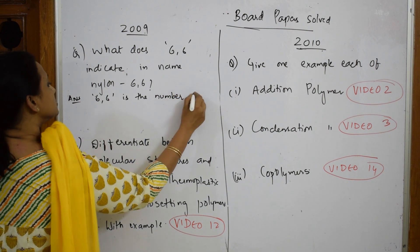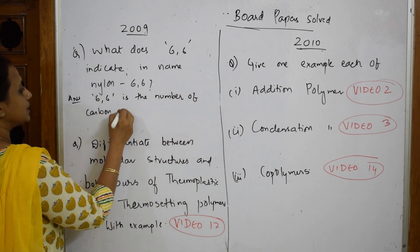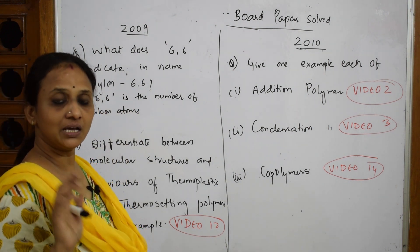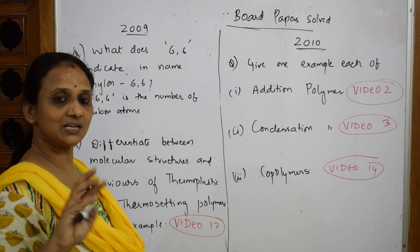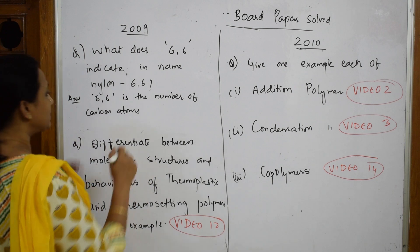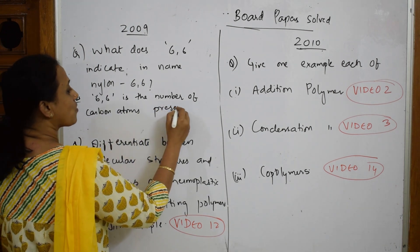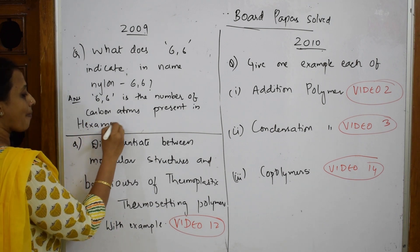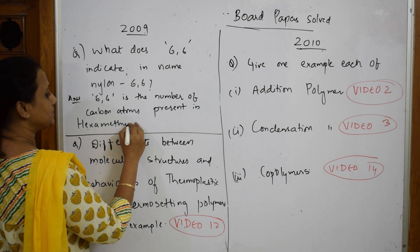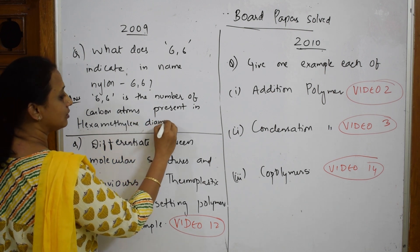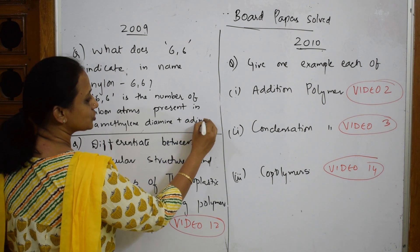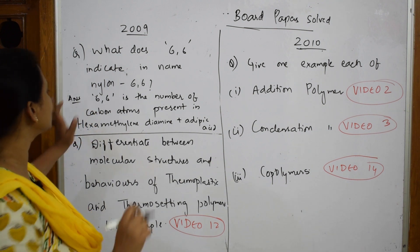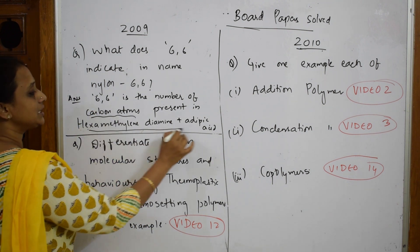Six six refers to the number of carbon atoms — one six is present in hexamethylene diamine, and the other is present in adipic acid, which has four plus two carbons, totalling six. So you should write: carbon atoms present in hexamethylene diamine and adipic acid. Write it in words like this; if you wish, you can write the formula also, but since they've asked what it means, the keyword answer is carbon atoms in hexamethylene diamine and adipic acid.